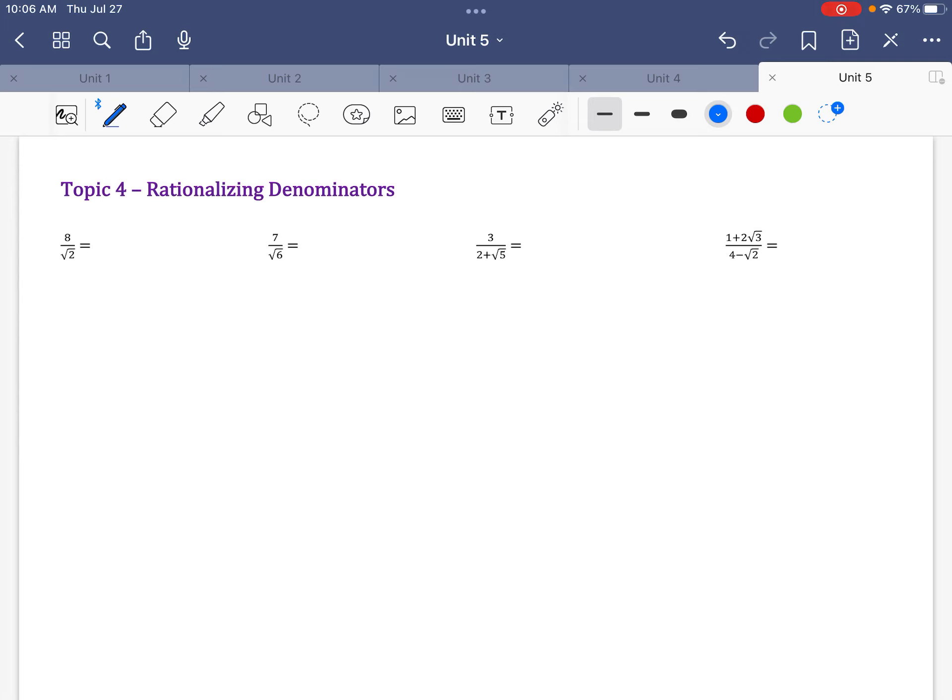But anyway, there's kind of like a rule in math where they don't like to leave radicals in the denominator of a problem. And so it kind of goes back to when we didn't have calculators, I'm pretty sure. And like if you have this answer here, 8 divided by radical 2.